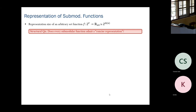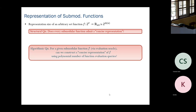By concise, I want the size of the representation to be polynomial in the size of the ground set, or even two to the little-o of n — can we get slightly better than two to the n?